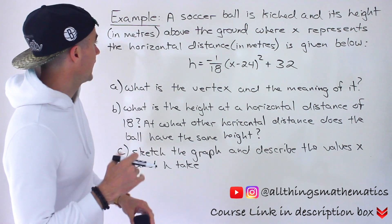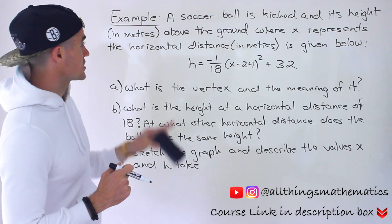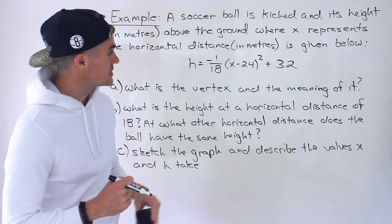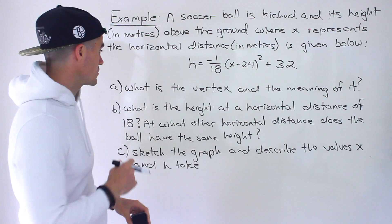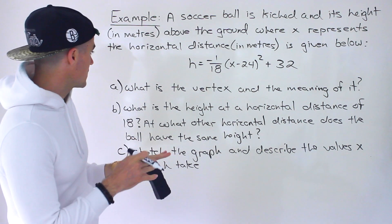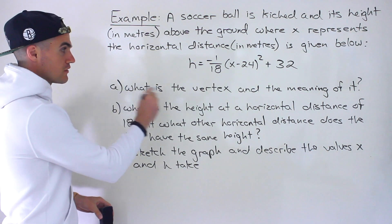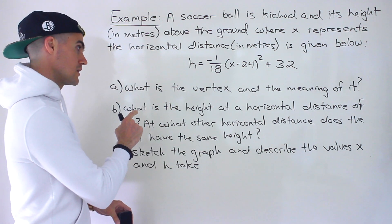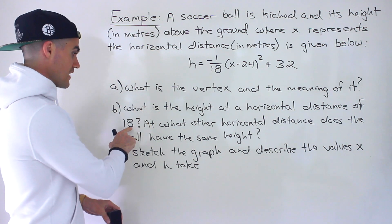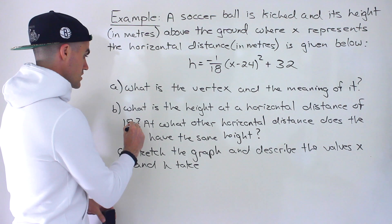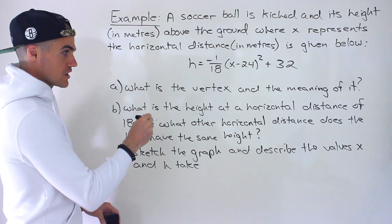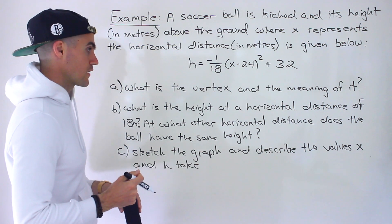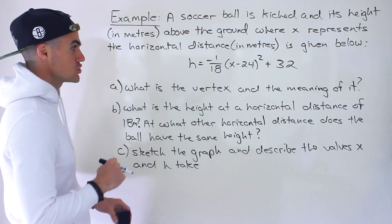We're told a soccer ball is kicked and its height in meters above the ground, where x represents the horizontal distance in meters, is given by h equals negative 1 over 18 times x minus 24 to the power of 2, plus 32. We have three things to do: find the vertex and its meaning, find the height at a horizontal distance of 18 meters and at what other horizontal distance the ball has the same height, and sketch the graph describing the values x and h can take.